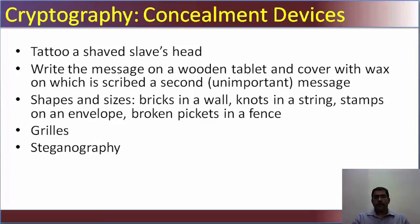In cryptography, let us look at concealment devices. One method was to tattoo a shaved slave's head, or write a message on a wooden tablet and cover it with wax on which a second unimportant message is scribed. Other concealment methods use shapes and sizes — like bricks in the wall, knots in a string, stamps on an envelope, broken pickets in a fence, grilles, and steganography.